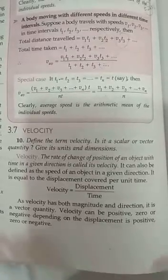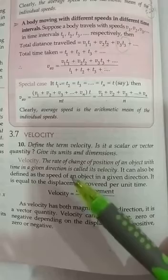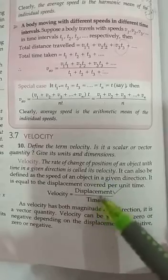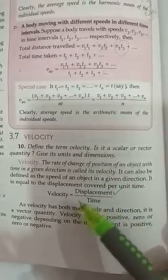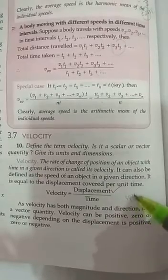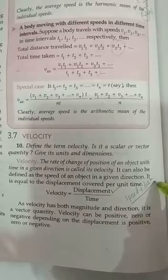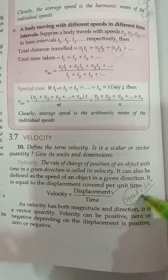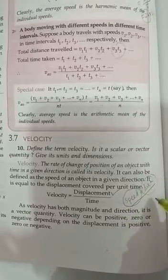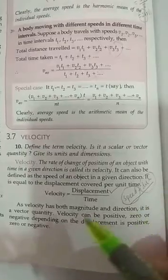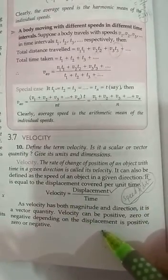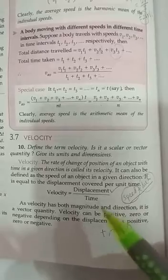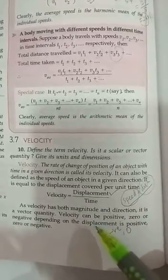Next is velocity. Velocity is the rate of change of position, and position is displacement. So the rate of change of displacement is known as velocity. Velocity is speed with direction. If a speed is having direction, that is known as velocity. Any quantity having both magnitude and direction is considered to be a vector quantity. So velocity may have positive value, negative value, or zero as well — it is a vector quantity.